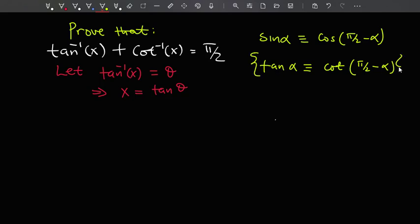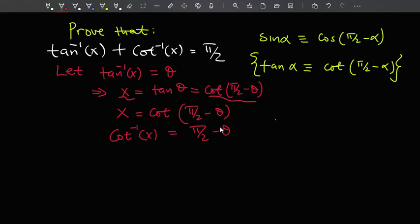So I'm going to be using this identity right here, or this equivalence relation here. So this means that x can also be cotangent of pi over 2 minus theta. So let's take this and this right here. So x is cotangent of pi over 2 minus theta.